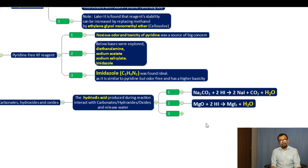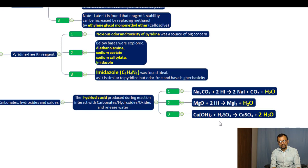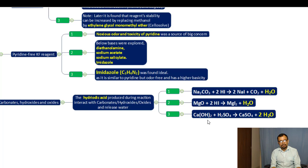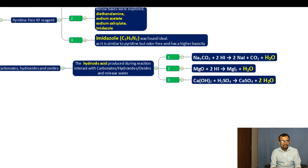Magnesium oxide reacts with hydroiodic acid and releases water molecules. Calcium hydroxide interacts with the sulfuric acid generated during the KF reaction, and calcium hydroxide can also release water molecules. These interactions make the KF reagent unsuitable for samples containing carbonates, hydroxides, and oxides.